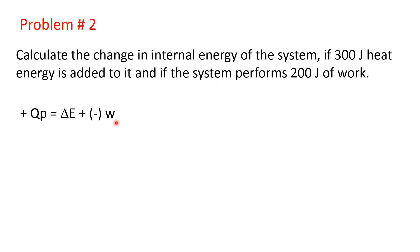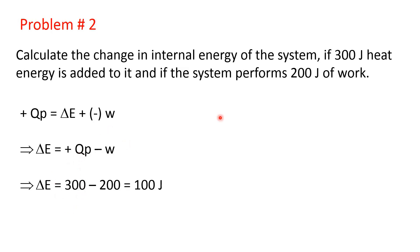The sign of work done by the gas will be taken as negative. So delta E equals Qp minus W — energy absorbed minus work of expansion, since energy is transferred from the system to surrounding. Therefore, delta E equals 300 minus 200 equals 100 joules. So delta E equals 100 joules — that is the change in internal energy.